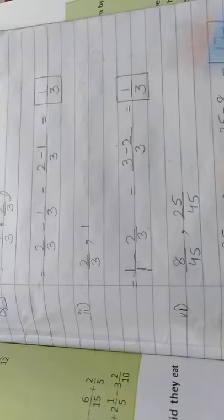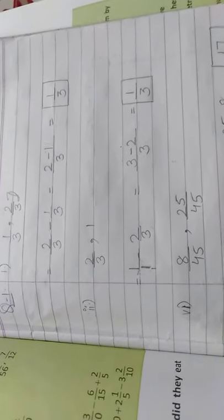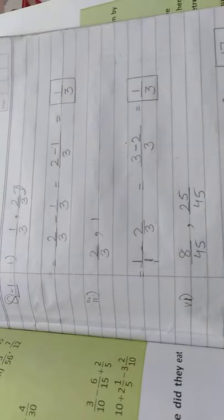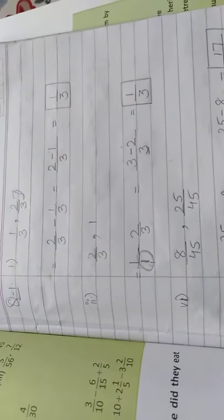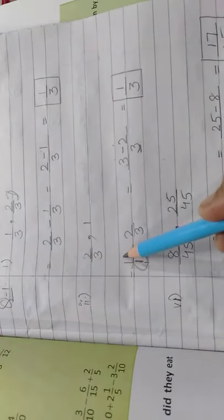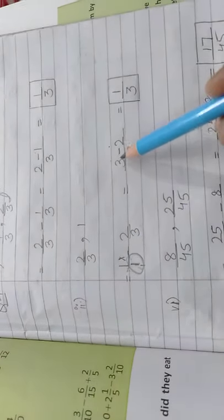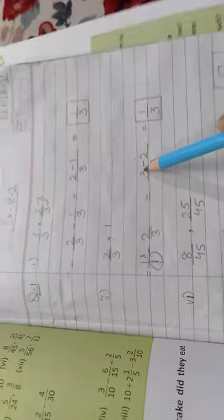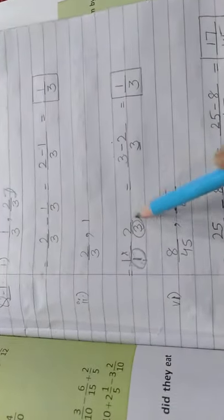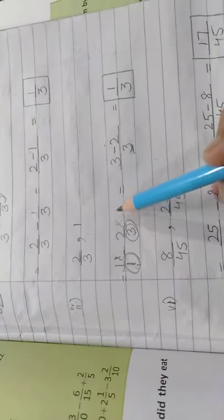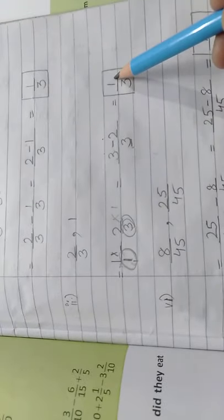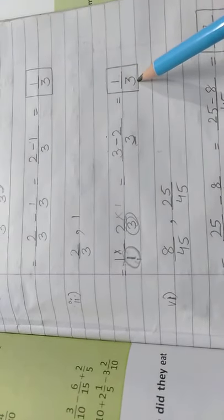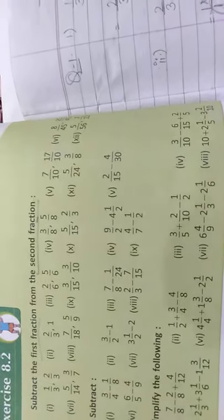Taking LCM of 1 and 3 gives us 3. For the first fraction: 3 divided by 1 is 3, so the numerator becomes 3 times 1 = 3. For the second fraction: 3 divided by 3 is 1, so the numerator stays 2. We subtract 2 from 3, giving 1. The final answer is 1/3. Parts 3, 4, and 5 follow the same procedure.